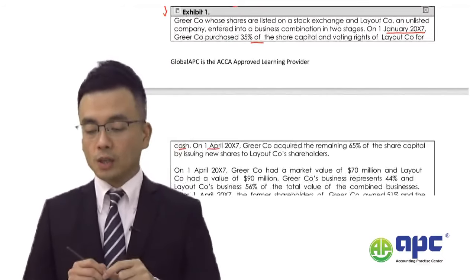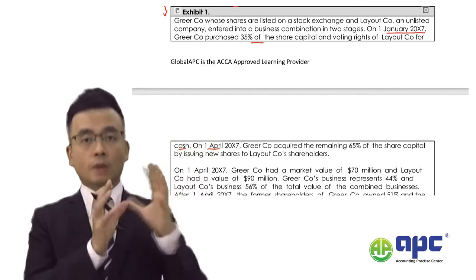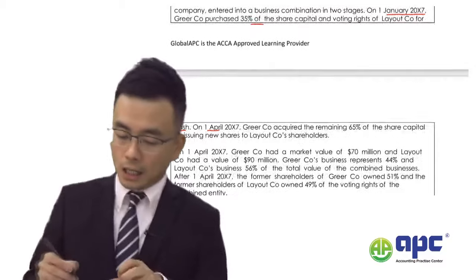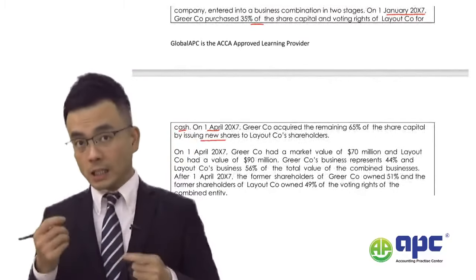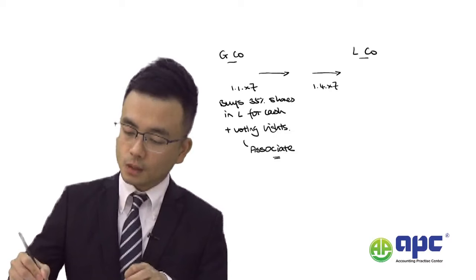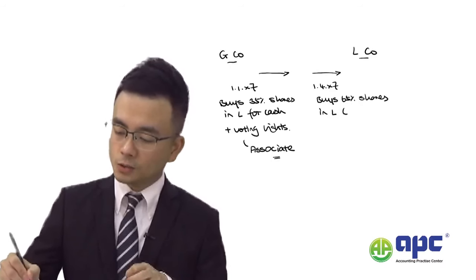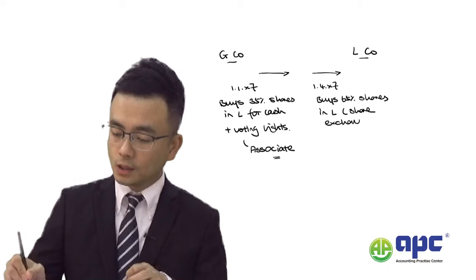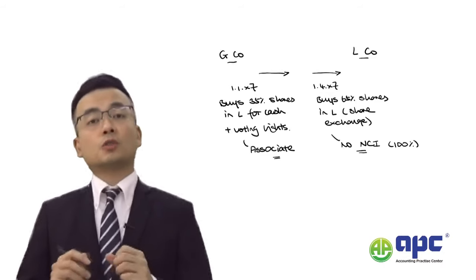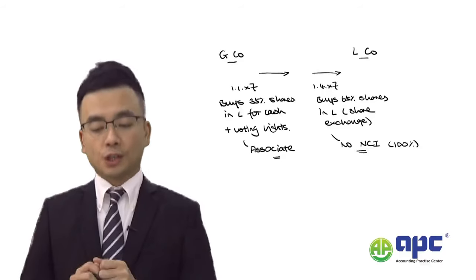Then on 1st April, G company acquires the remaining 65% shares via a share-for-share exchange — so no cash is spent. This means initially 35% and then 65%, with no NCI because we obtained 100% of L company. On 1st April X7, G company buys 65% shares in L using a share-for-share exchange, resulting in 100% controlling interest in L company, making L a subsidiary of G company.